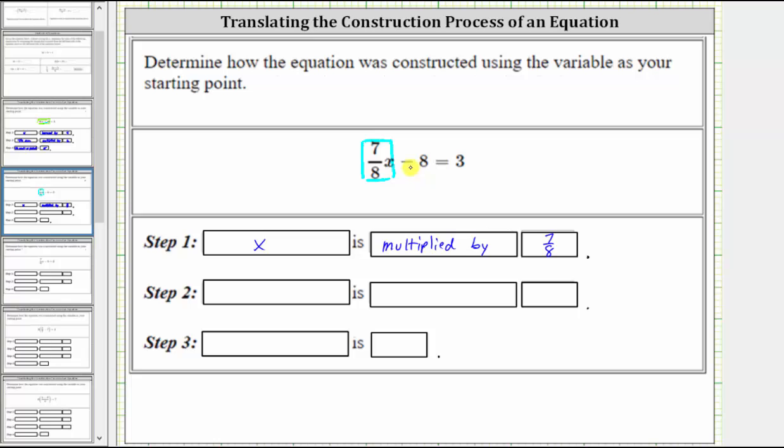Step one gives us this term. Then notice we have minus 8, which means this product is decreased by 8. This is step two of the construction process. So for step two, we say the product from step one is decreased by 8.